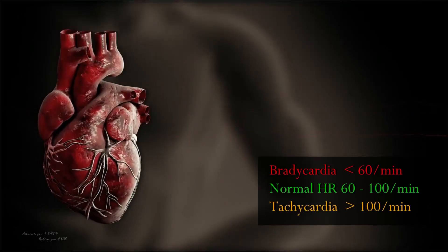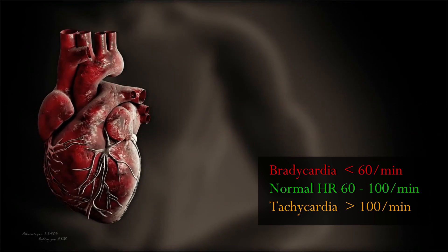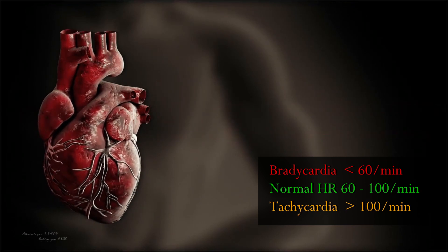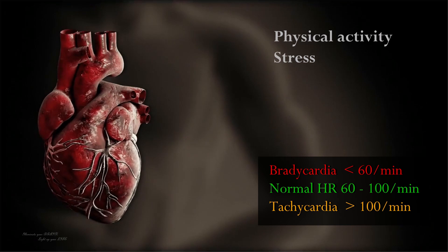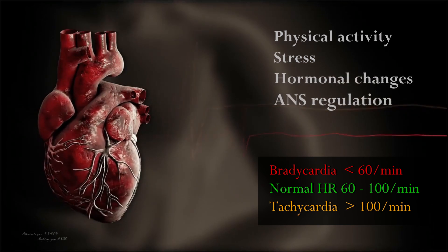Heart rate is the number of times the heart beats per minute. It is influenced by factors such as physical activity, stress, hormonal changes, and autonomic nervous system regulation.